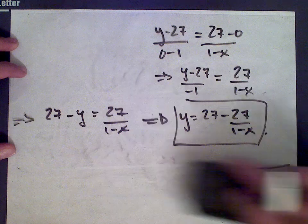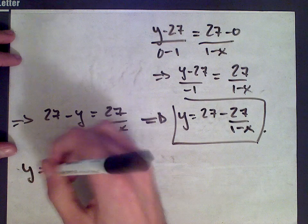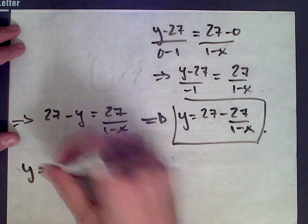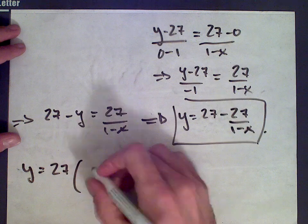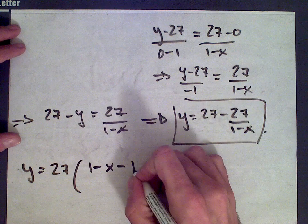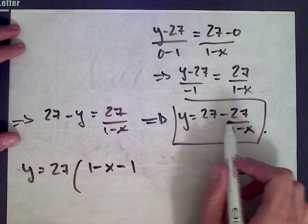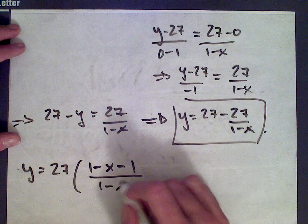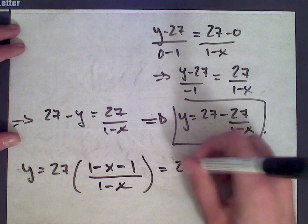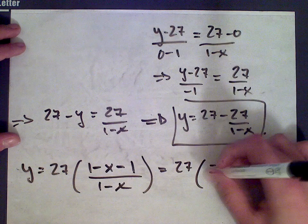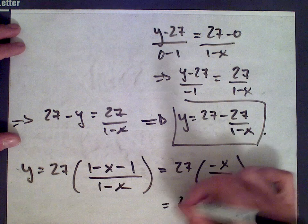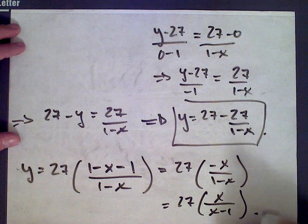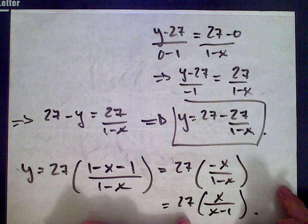Let's simplify this expression a bit. Getting a common denominator, we get y equals 27 times (1 minus x) minus 1, all over (1 minus x). The ones cancel and we're left with y equals 27 times (negative x) over (1 minus x), which equals 27x over (x minus 1). So we have a simple expression for y in terms of x.